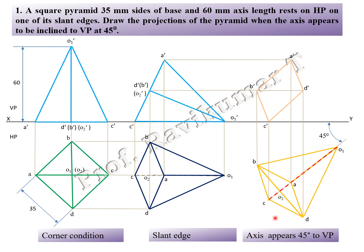When looking from the bottom of the object, the complete bottom face is completely visible, so draw with visible line. Identify which are invisible — B is away from the observer, so B to O is invisible line. D to O is also visible. This is how the first problem is solved for square pyramid, especially for slant edge: slant edge means corner position, slant triangle face means edge condition.